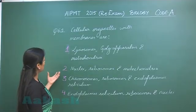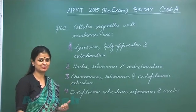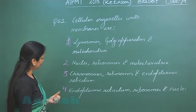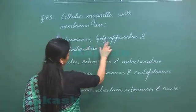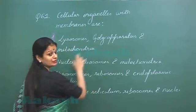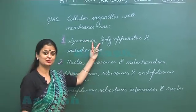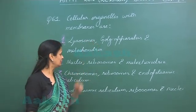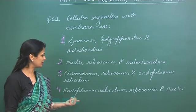In question number 61 we have to look for the cell organelles which possess membranes. So if we look into option number one: lysosome, golgi apparatus, mitochondria - they all have membrane. In both these cases there is presence of single membrane, and in the mitochondria double membrane is present.